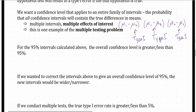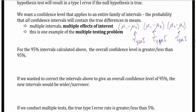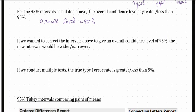For the 95% intervals — such as the interval for mu 1 minus mu 2, the interval for mu 1 minus mu 3, and the interval for mu 2 minus mu 3 — would the overall confidence level be greater than or less than 95%? The overall confidence level would be less than 95%, because each interval has a possibility of a type 1 error, and the probability of at least one type 1 error goes up, so the overall confidence level must go down.